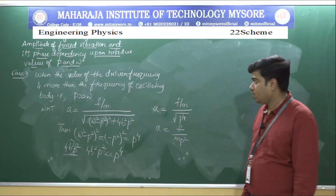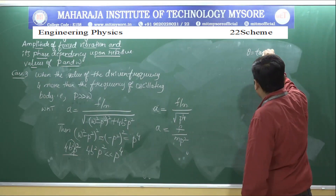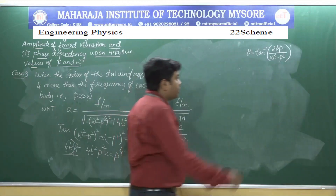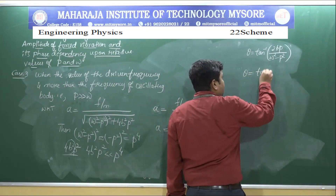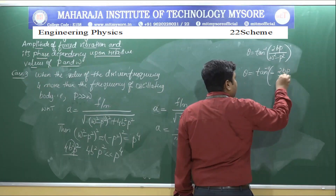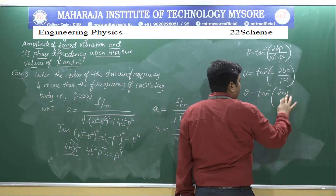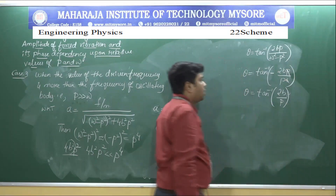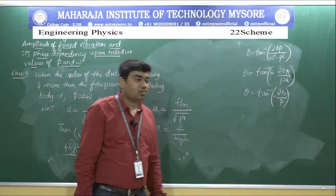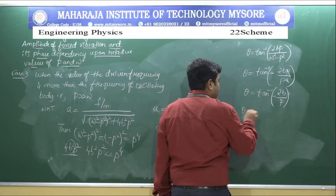The amplitude of the oscillating body depends completely on the amplitude of the applied force. For the phase, theta equals tan inverse of 2bp divided by (omega squared minus p squared). Since omega is negligible compared to p, this becomes tan inverse of minus 2bp divided by p squared, which simplifies to tan inverse of minus 2b divided by p.